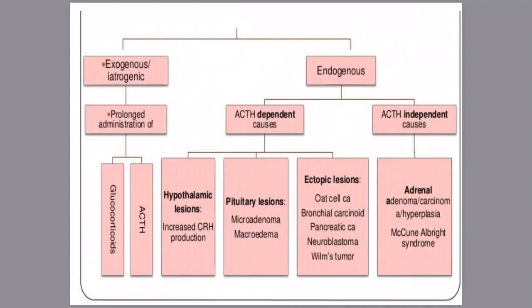In summary, Cushing's syndrome is caused either by exogenous administration of steroids or prolonged administration of ACTH or glucocorticoids, or by endogenous production. Endogenous causes are either ACTH-dependent — hypothalamic lesion, pituitary lesion, or ectopic hormone secretion — or ACTH-independent, where cortisol is secreted from the adrenal cortex irrespective of ACTH stimulation, and ACTH is consequently suppressed.